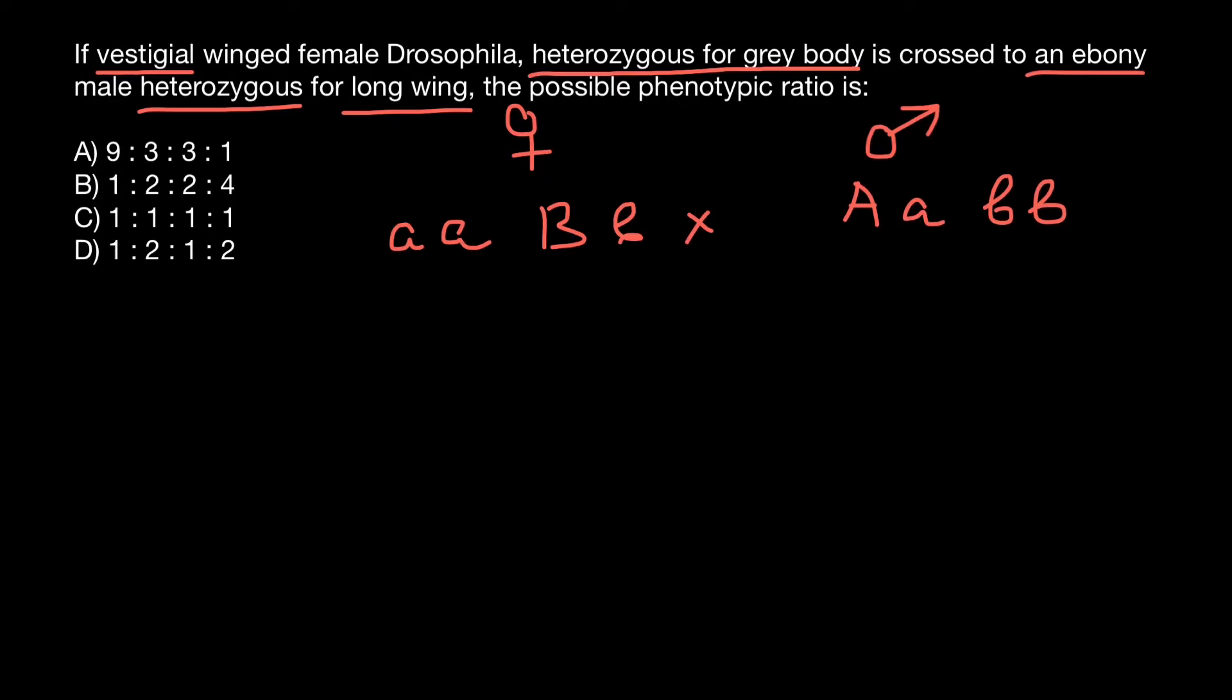Okay, so now we know genotypes of both females and male. Now let's take a look what female gametes can produce. And basically she can produce two variants of the gametes: small a and capital B. One variant. And second variant would be small a and small b.